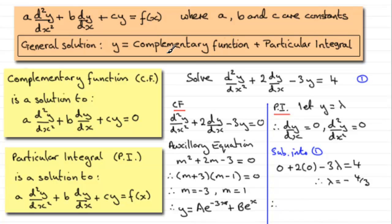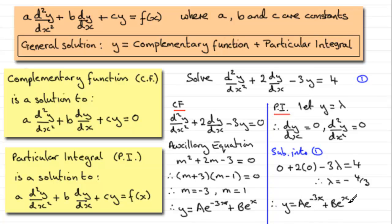Therefore the general solution is the complementary function plus the particular integral: y = A·e^(−3x) + B·e^(x) − 4/3.